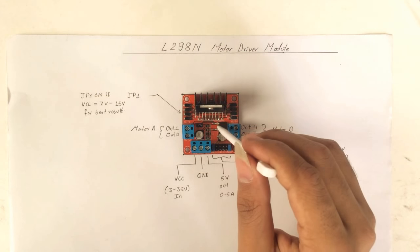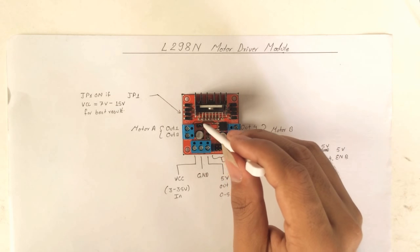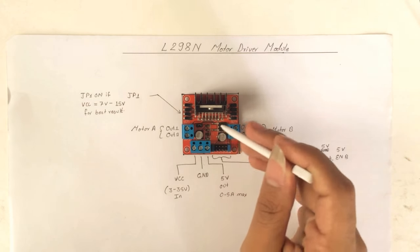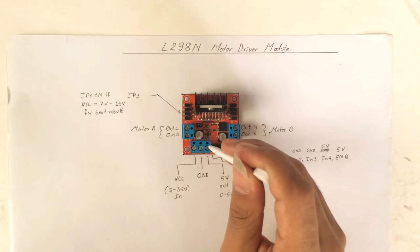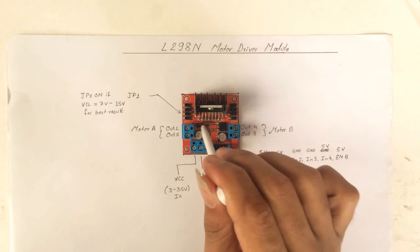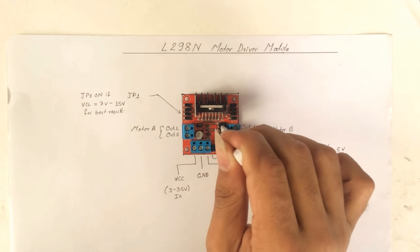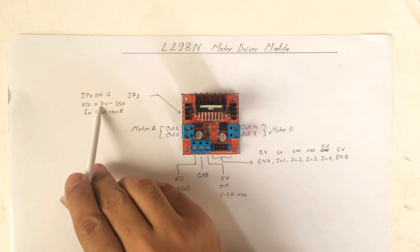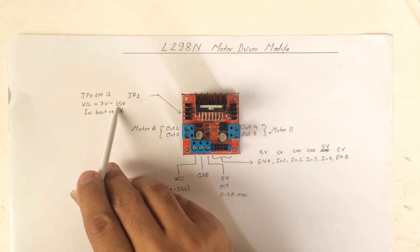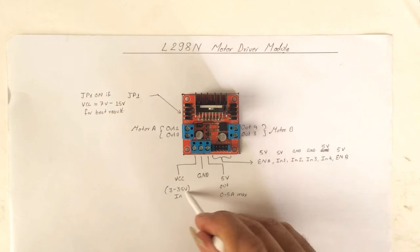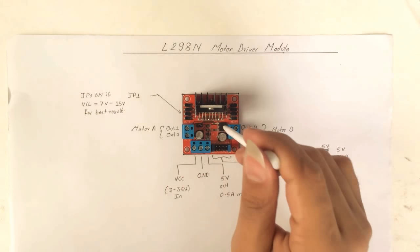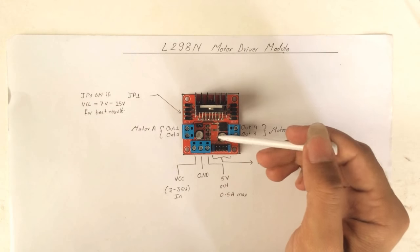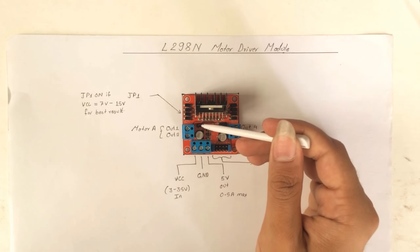We have this connector written as JP1. It is our connector that gives 5 volt output or enables this 5 volt regulator in this L298 module. It is better to give greater than 7 volt up to 15 volt. It can support 35 volt but it is better not to exceed 15 volt because it gets hot very soon. If you don't want to use this you can just eliminate this jumper.